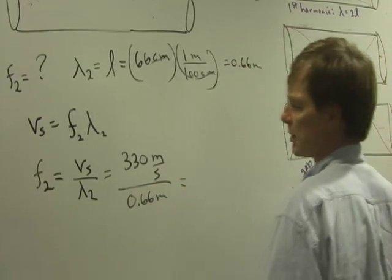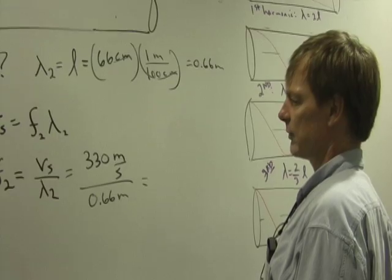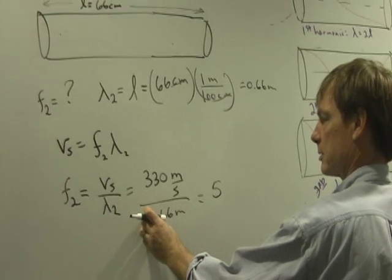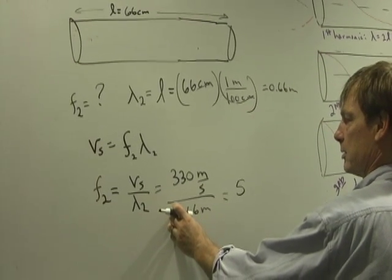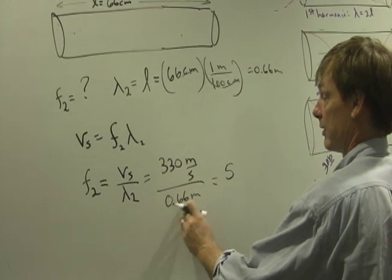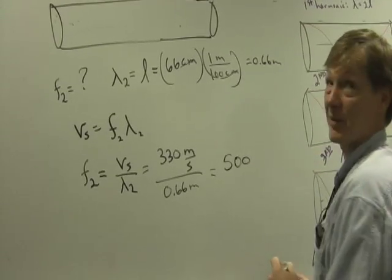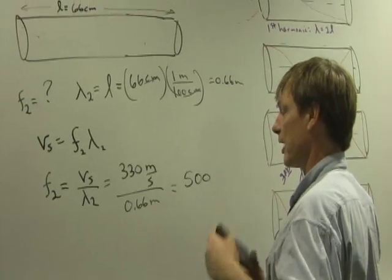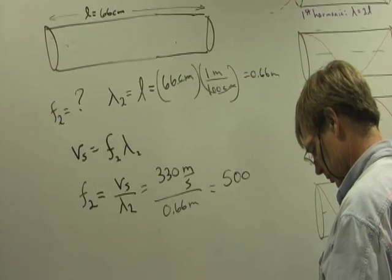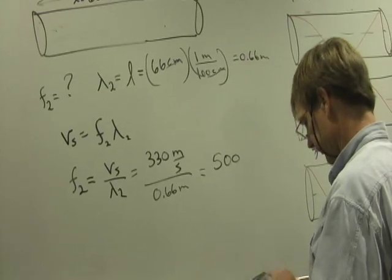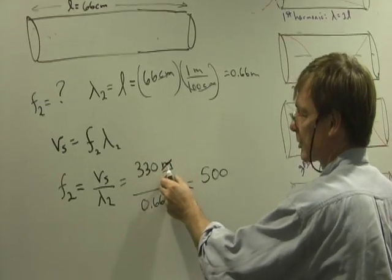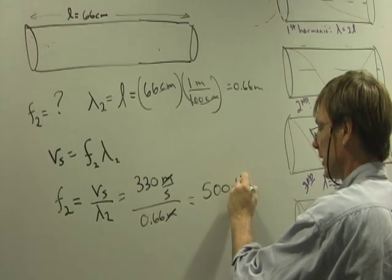And that's going to be, I think that's going to be 500. Right on. And that's meters per second divided by meters. So I got per second, but I know it's cycles per second. And a cycle per second is a hertz.